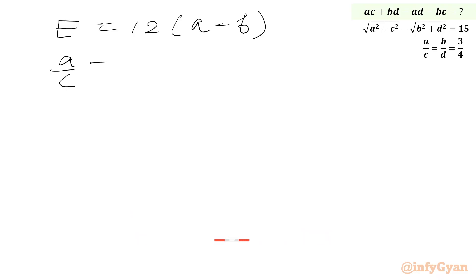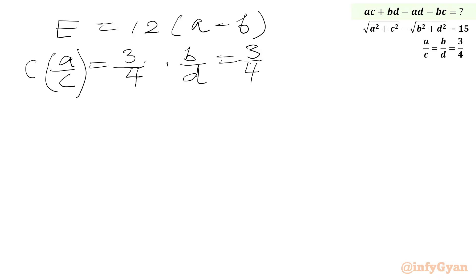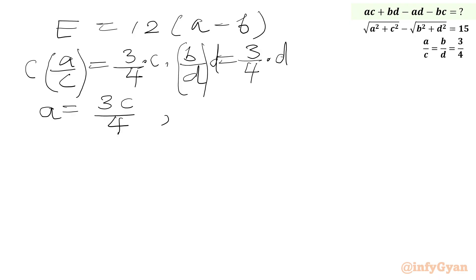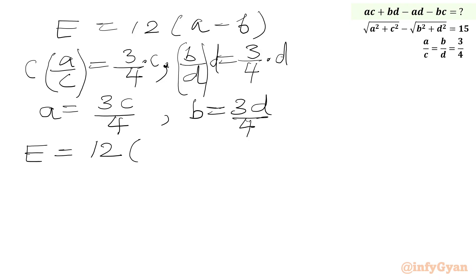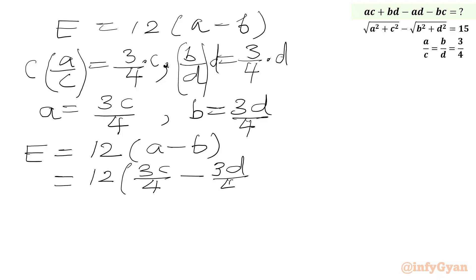We write a over c equal to 3 over 4 and b over d equal to 3 over 4. Since a, b, c, d are positive integers, multiplying both sides by c gives a equal to 3c over 4, and multiplying both sides by d gives b equal to 3d over 4. Plugging into the required expression e equal to 12 times (a minus b), we substitute 3c over 4 for a and 3d over 4 for b, then take 3 over 4 common to get 12 times 3 over 4 times (c minus d).